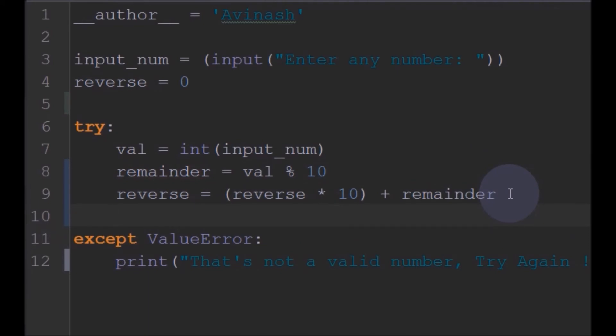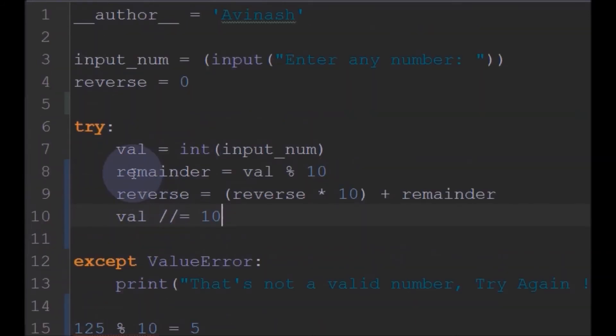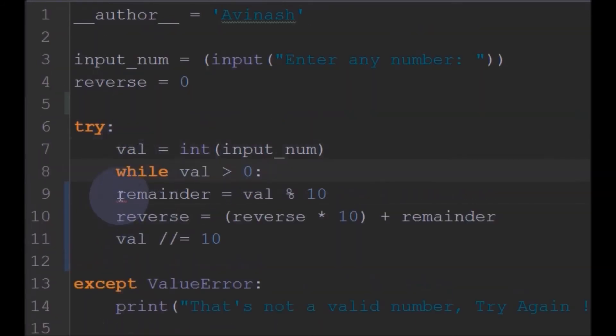So, when we add, we will floor divide this value with 10. Actually this should be in the while loop. So, this will all happen in the while loop.